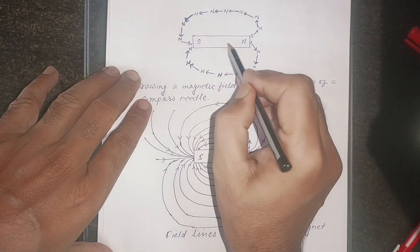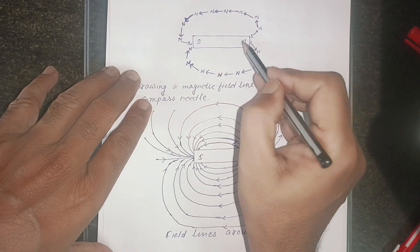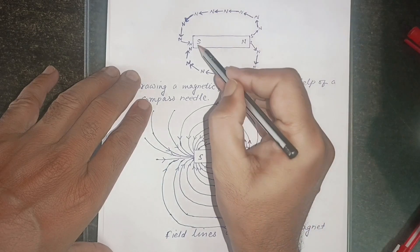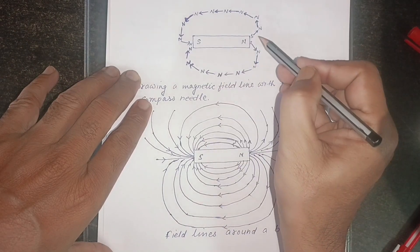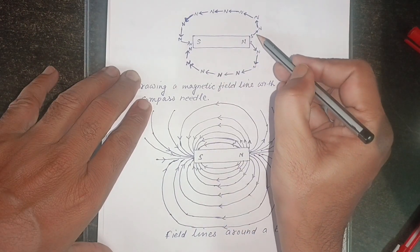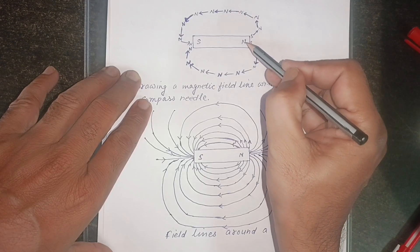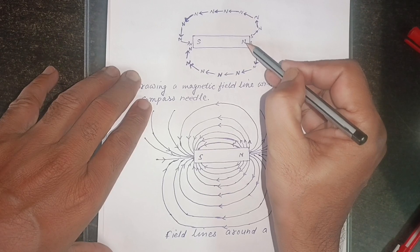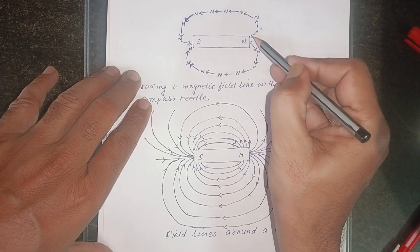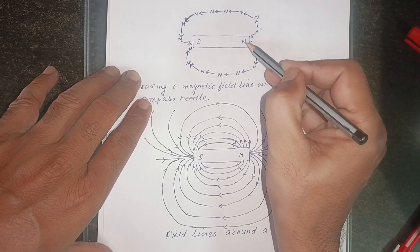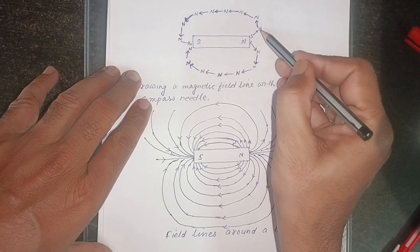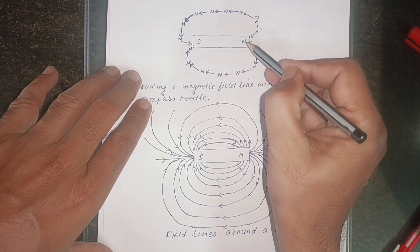Children, this is a bar magnet. This is north pole and this is south pole. We have to bring a compass needle near the north pole. The south pole of the compass will be towards north pole of the magnet, because south pole will be attracted by north pole. And the north pole of the compass will be away from north pole of the magnet.